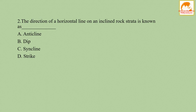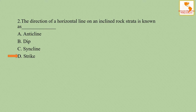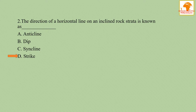Question number two: the direction of a horizontal line on the inclined rock strata is known as — option A anticline, option B dip, option C incline, option D strike. The correct answer is D, strike. The strike of inclined beds is the direction of any horizontal line along the bedding plane, and the direction of dip of rock beds is always at right angle to the strike. Option A, anticline: up-folded rock beds are called anticline. Option B, dip: the inclination of rock beds with respect to the horizontal plane is called dip. Option C, syncline: the down-folded rock beds due to compressive force is called syncline.